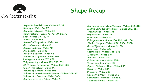Sine rule: useful when you have sides and angles opposite each other — a/sin A = b/sin B. Flip it to sin A/a = sin B/b when finding an angle. Cosine rule: useful when you have two sides and the included angle to find the third side, or all three sides to find an angle. Area of a triangle: ½ab sin C, where a and b are two sides and C is the angle between them.